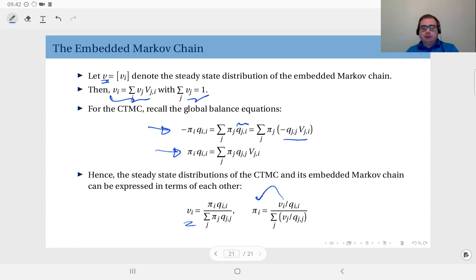steady state distribution. The embedded Markov chain, which is a discrete time Markov chain, and the continuous time Markov chain are related in this sense: if one has a steady state distribution, the other also must have one. Not only that, but you can also derive the numerical distributions from one to the other.